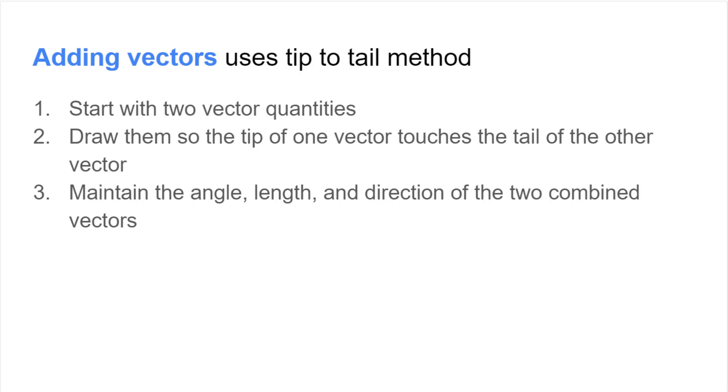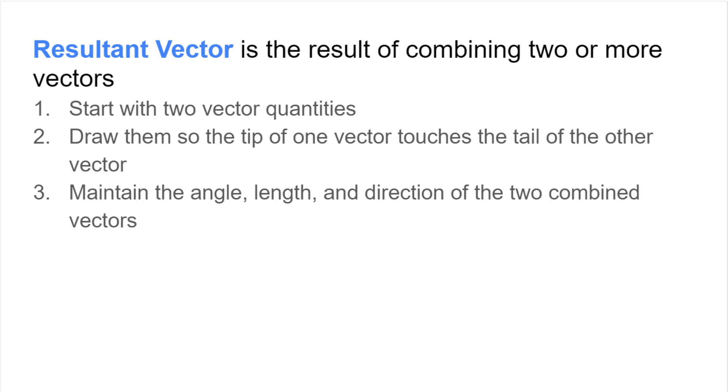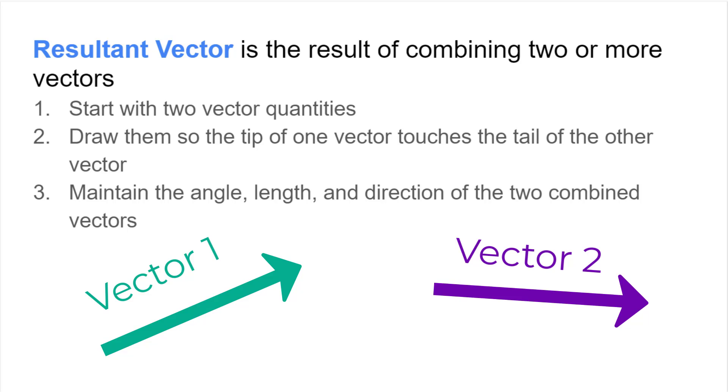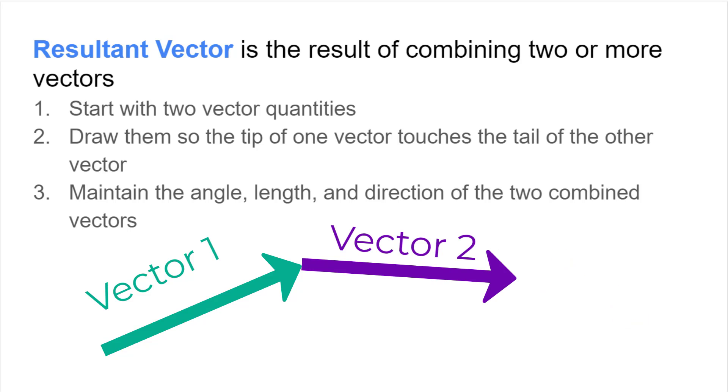With those two vectors combined you can create the resultant vector. This vector is the result of the addition of the two previous vectors and their combination. Take these two vectors into account, vector 1 and vector 2. If I were to add these two vectors we can take the length, direction, and angle of vector 2 and draw it so that the tip of vector 1 meets with the tail of vector 2. The resultant vector is the vector that can be formed from the tail of vector 1 to the tip of vector 2.